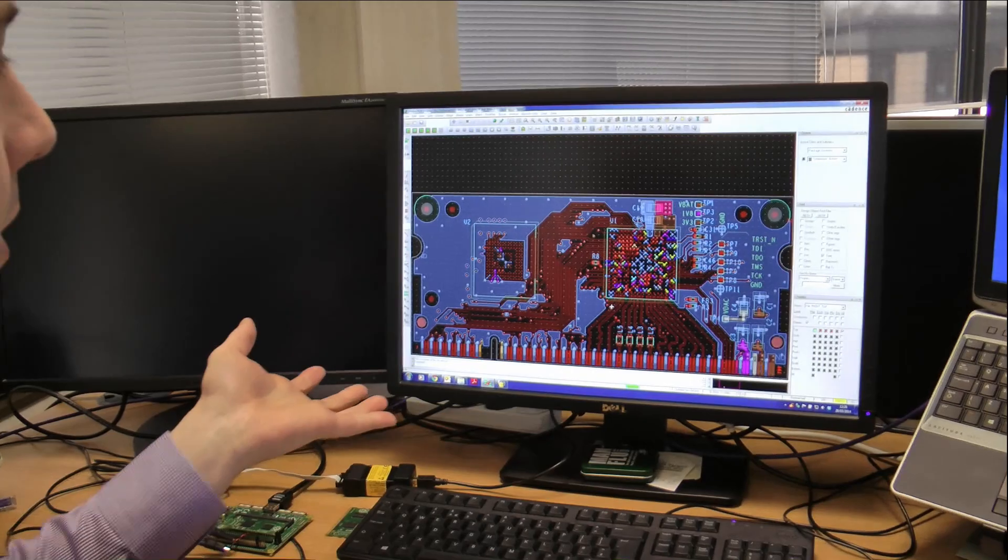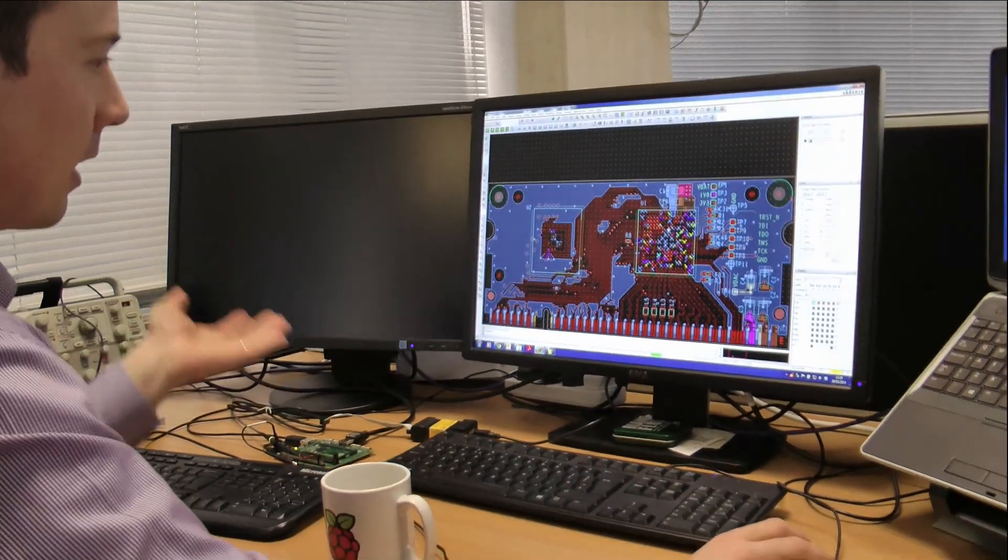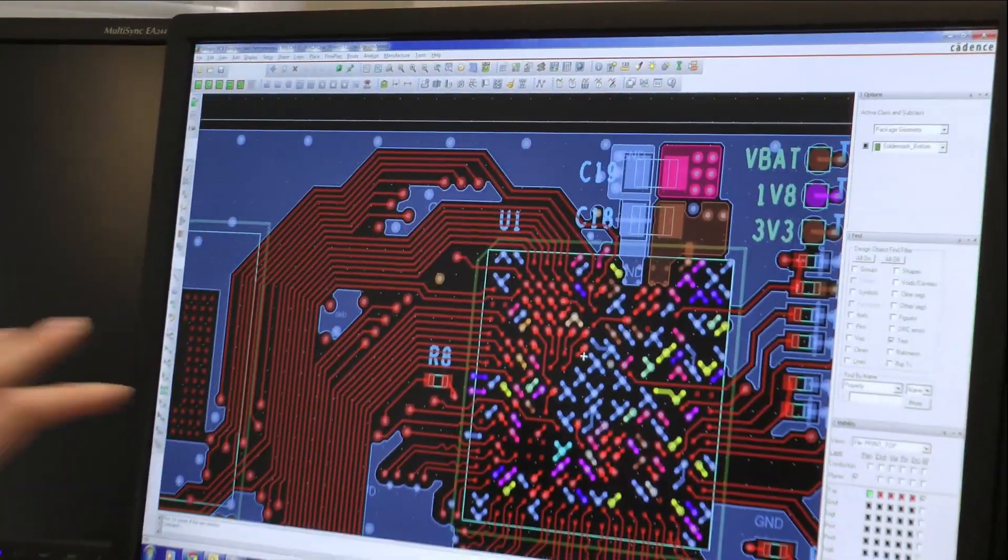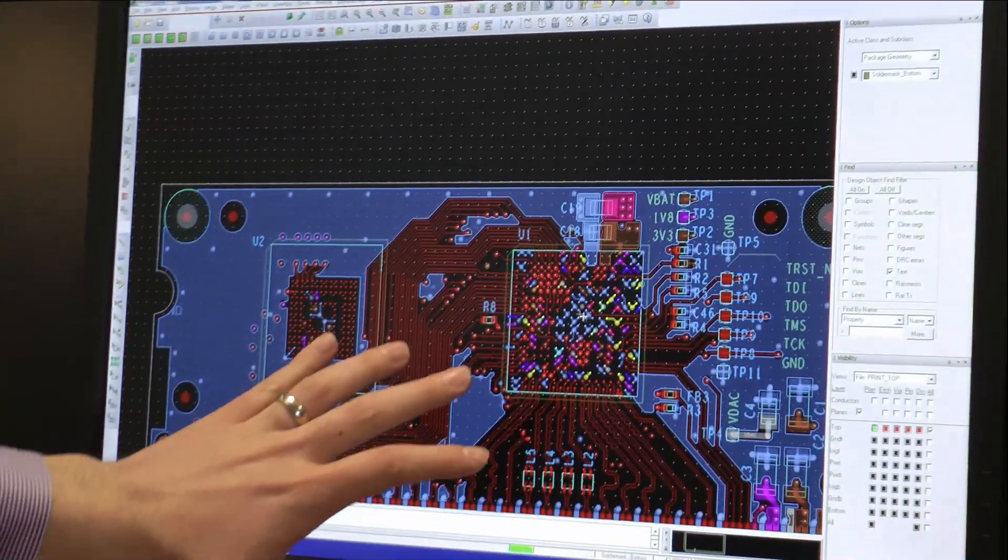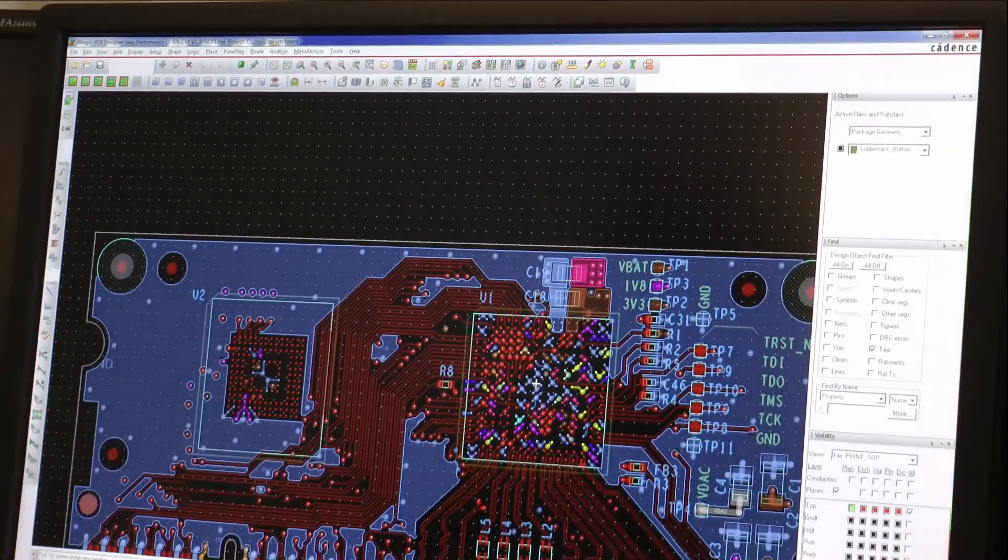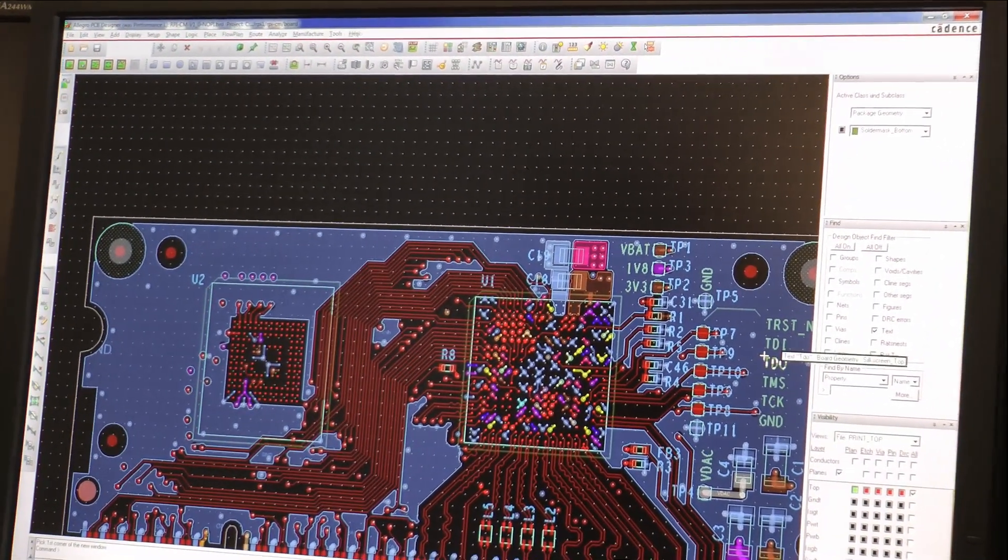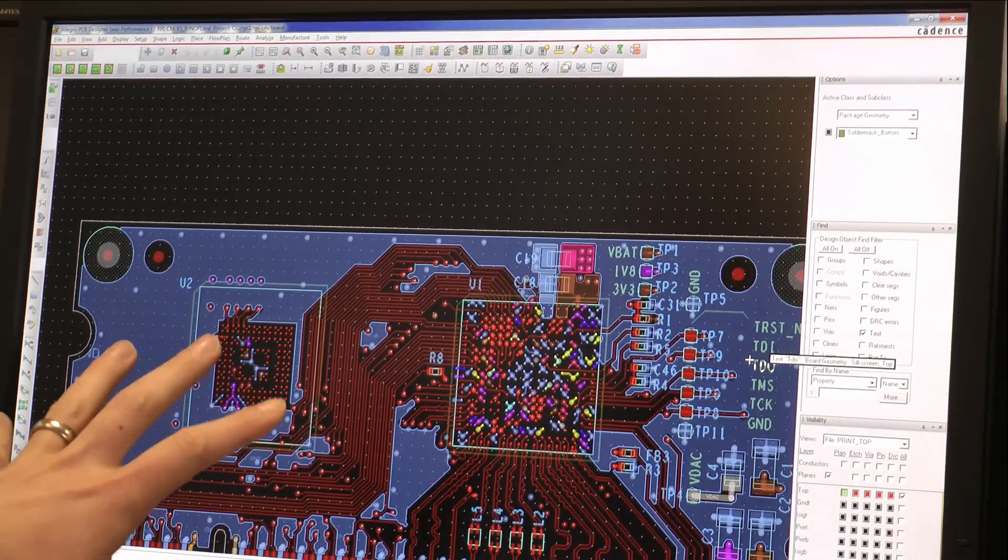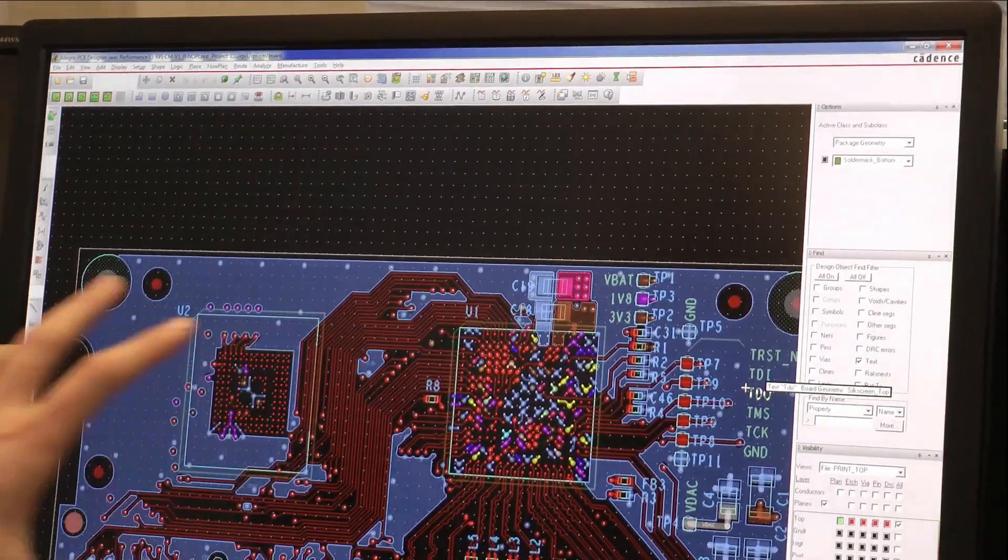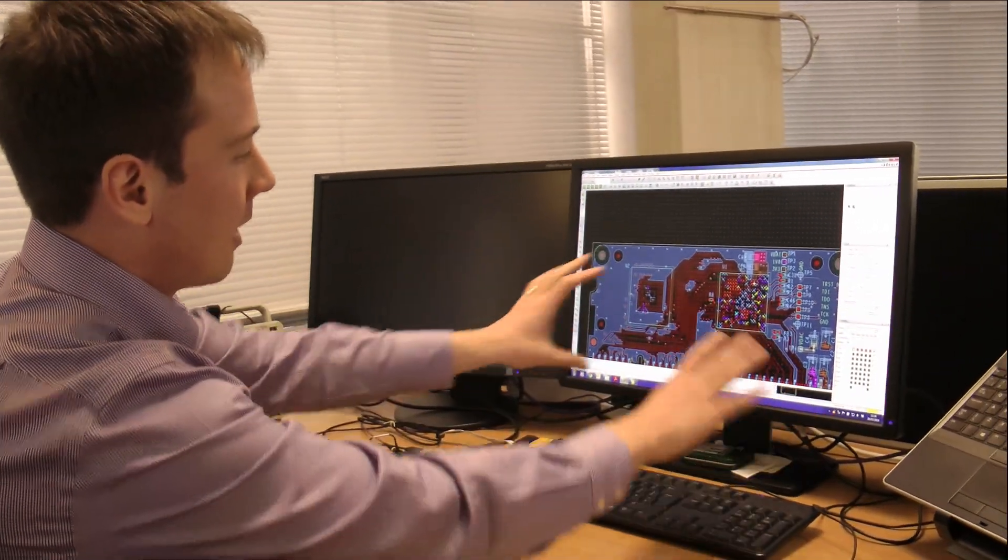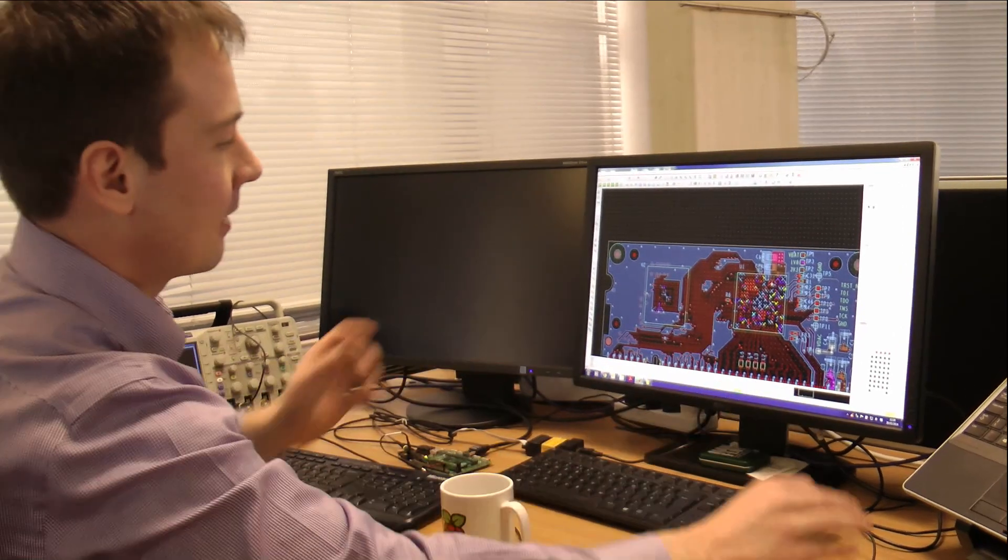So this is the Raspberry Pi compute module CAD file. As you can see, this is the main processor, and there's an awful lot of tracking. Actually, the biggest challenge with this board, because the compute module gives you basically all the I.O. of the chip rather than just a subset on the Raspberry Pi, we had to track all the pins out, effectively.